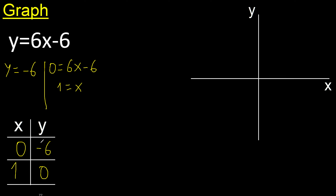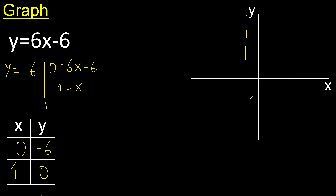y is minus 6 — negative. Minus 6 is here. x is 0; x = 0 is here. 0 minus 6, therefore point is here.